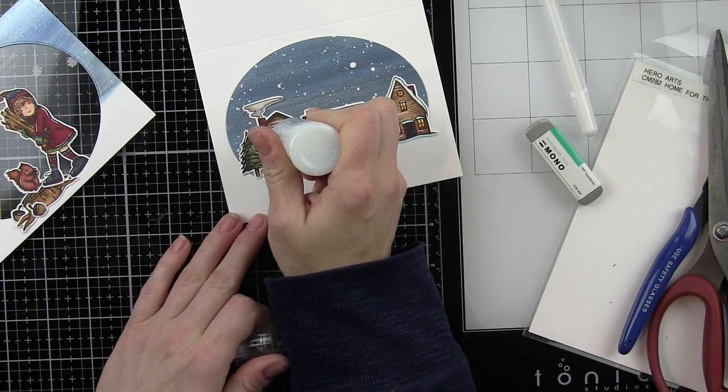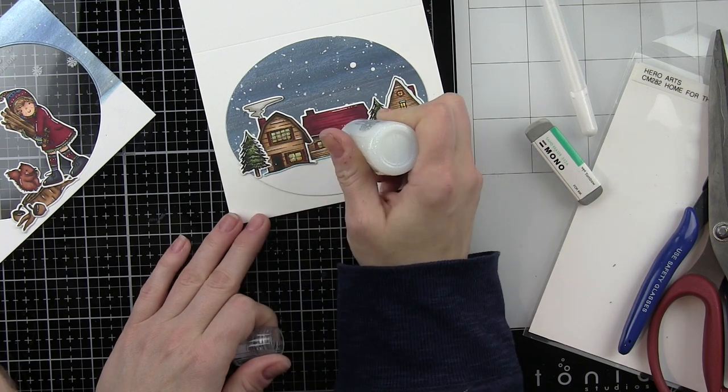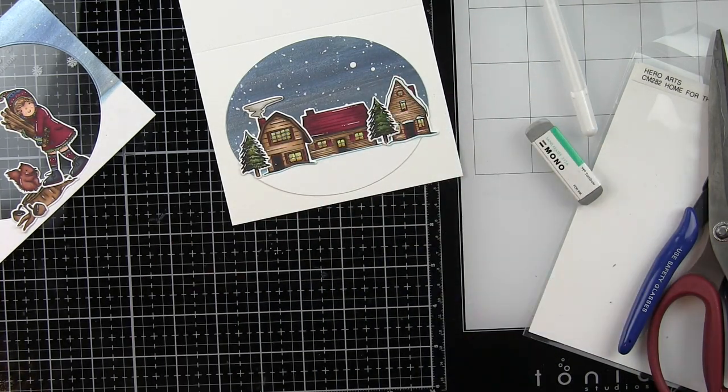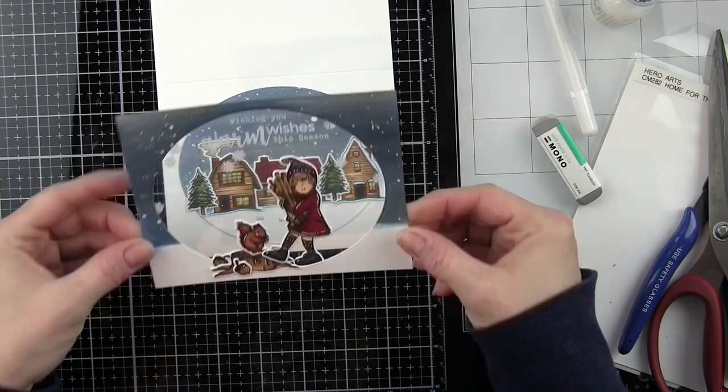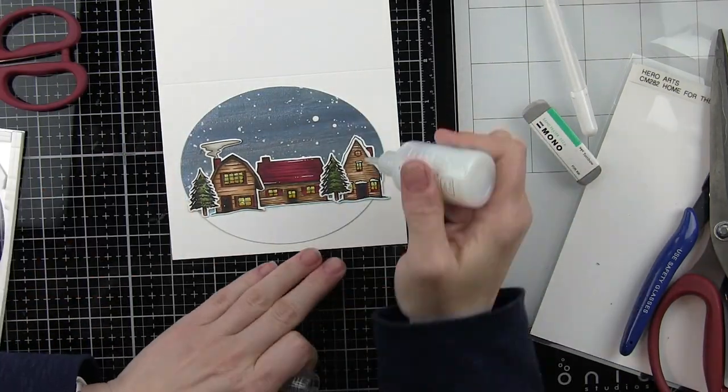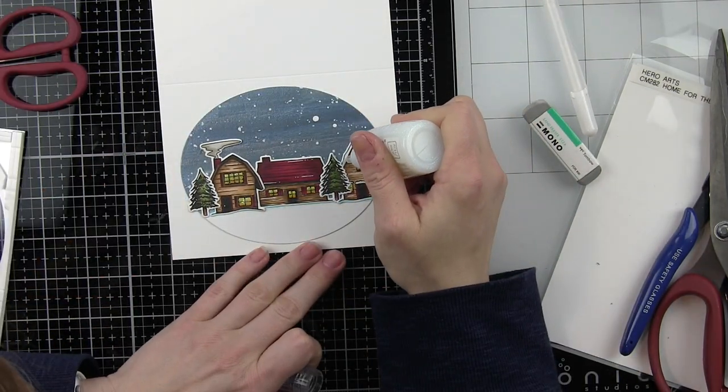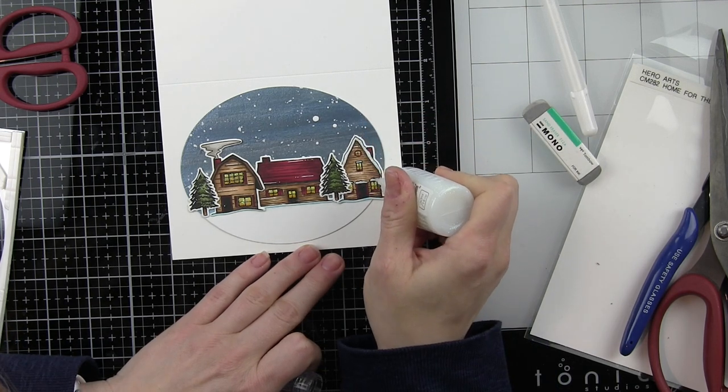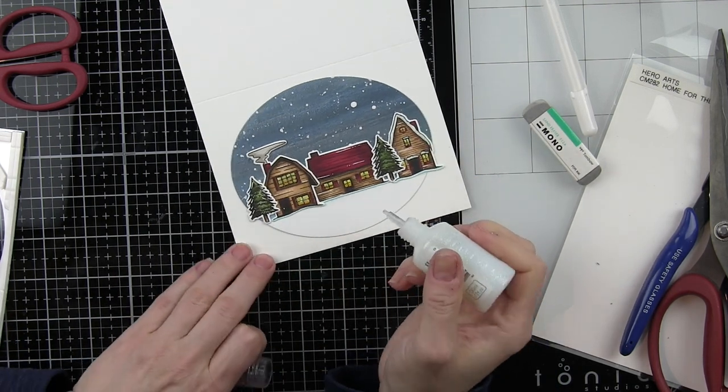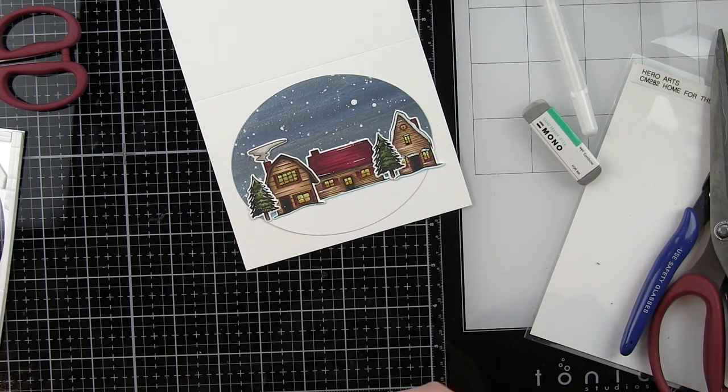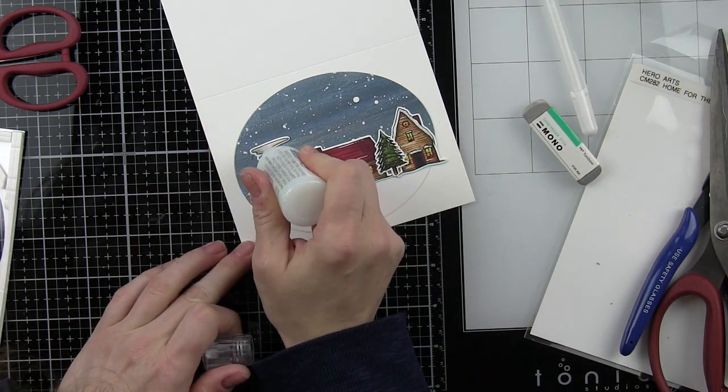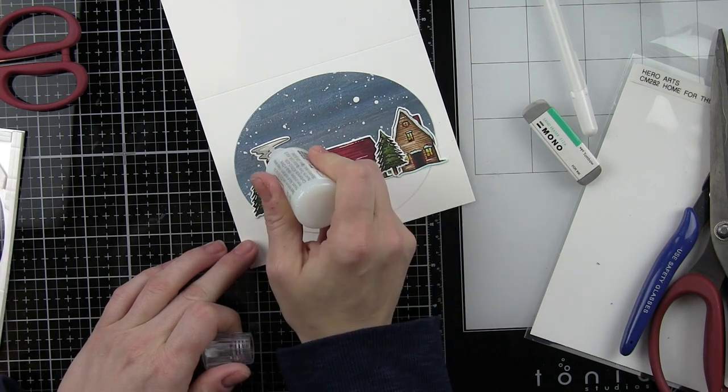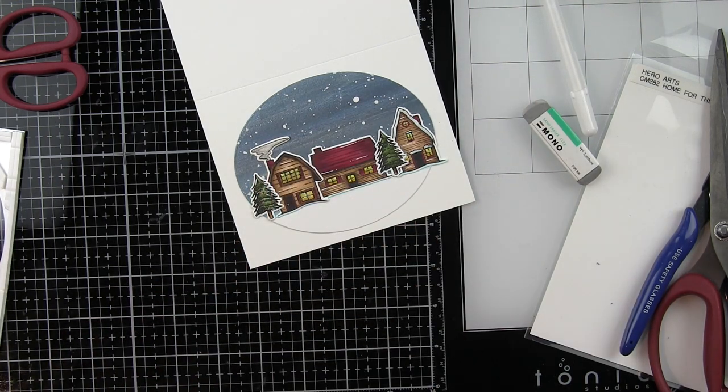Nuvo Crystal Drops in White Blizzard is going to go on and it does kind of look milky, but it will dry completely clear, which is going to give the windows that sparkly effect. I'm also going to add it to any of the snow areas on the houses. This should be, it's a pretty thin layer and it should be dry fairly quickly. I even added a little to the smoke coming out of the chimney.